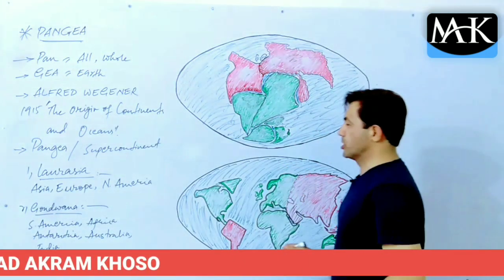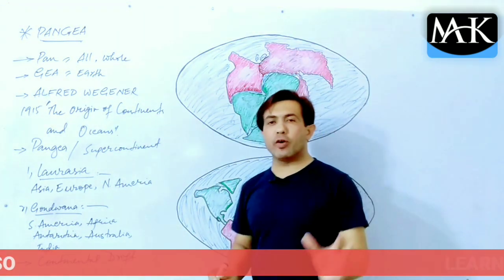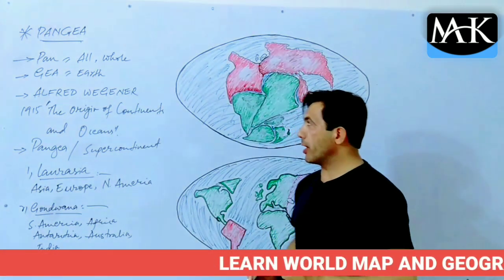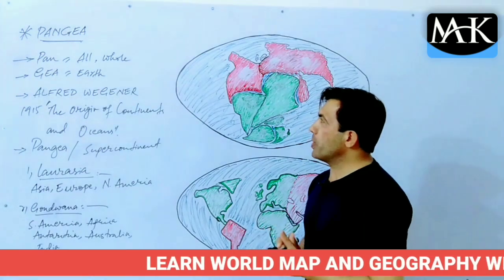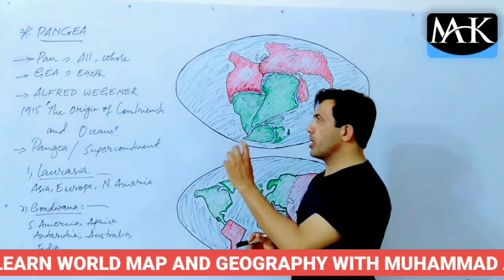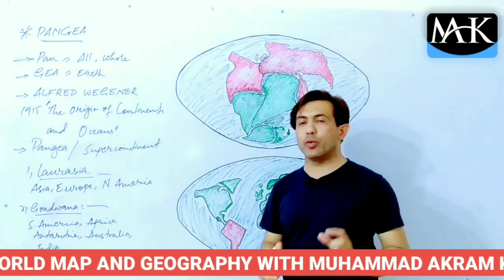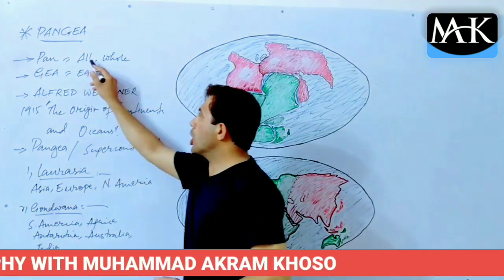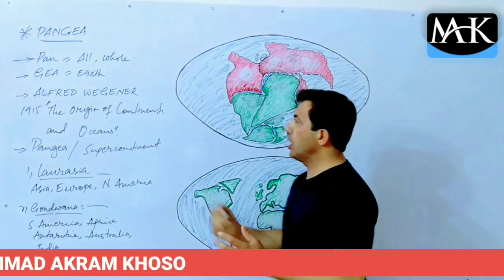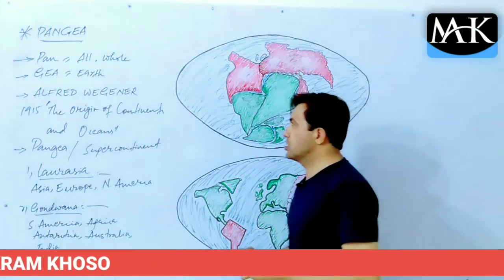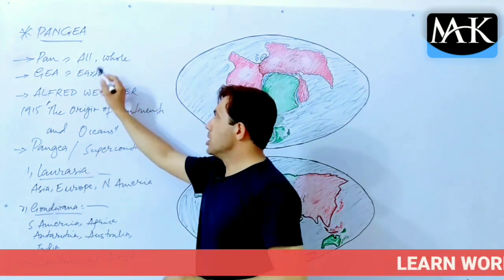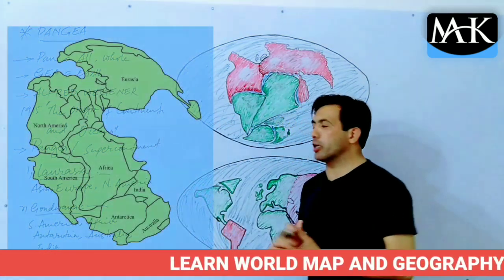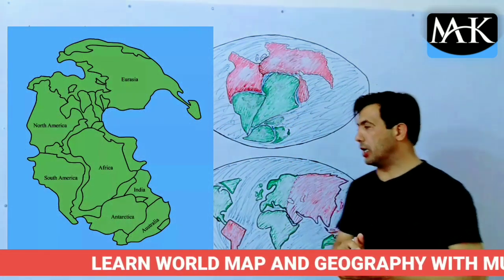Pangea is actually the combination of two words: 'pan' means all, entire, whole, and 'gea' means earth. So Pangea means the entire earth or the whole earth.